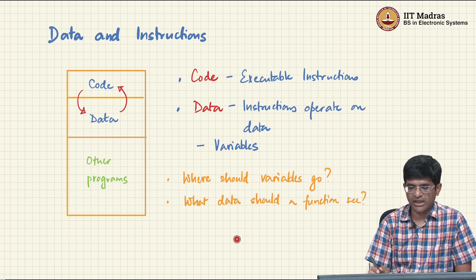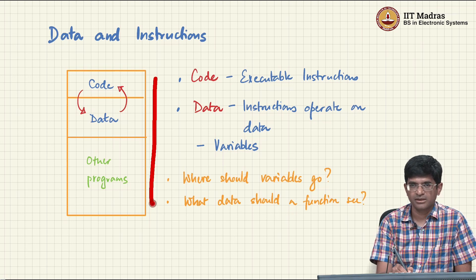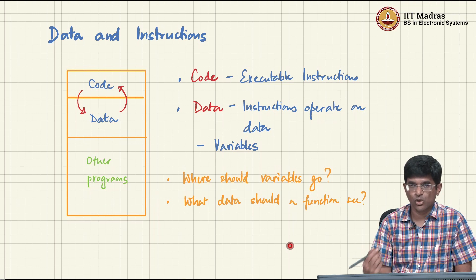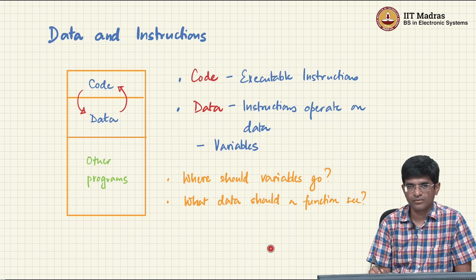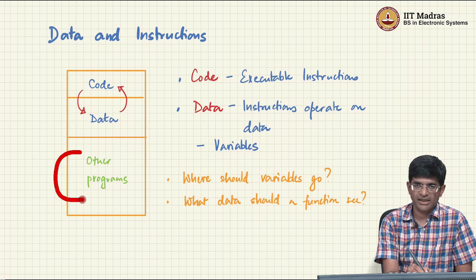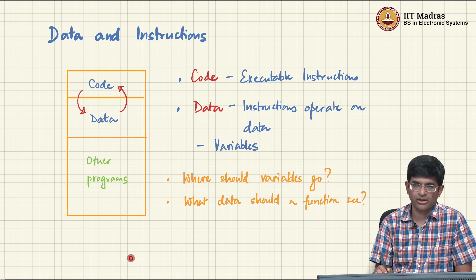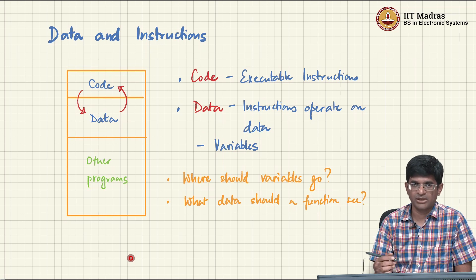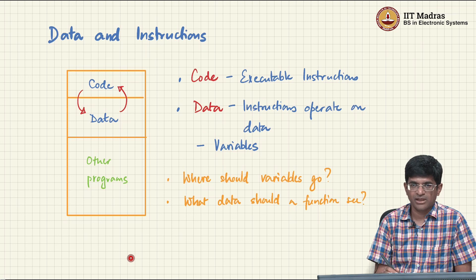One of the questions that needs to be answered is: what happens to variables — where do they actually go — and what data should any given function be allowed to see? Because in any computer's memory there will also be other programs present at any given point in time, and you do not always want any function to see what other functions are working on. There can be security issues, crashes, or information that should not be revealed leaking out. So how we arrange code and data in memory is something we need to understand to fully appreciate how functions work.